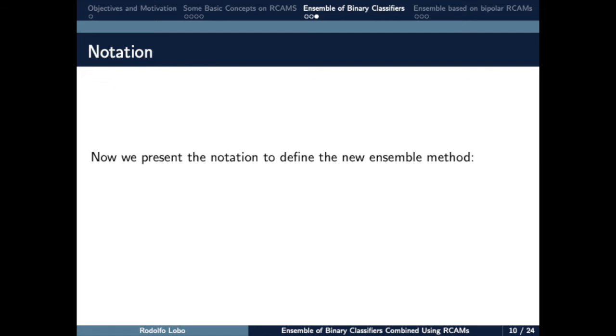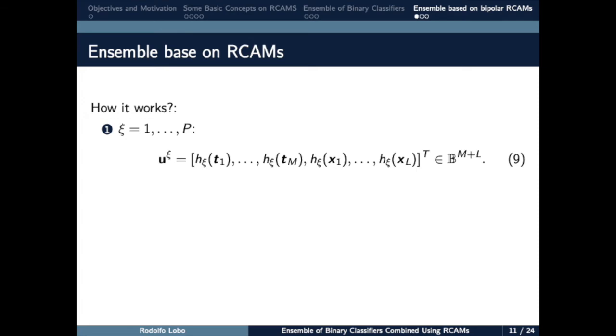Let us now present the notation of this work. Calligraphic T is the training set, where each Ti are vectors of features, and the Di, the corresponding class. X is a batch of input samples. The ith fundamental memory is obtained by concatenating the outputs of the ith base classifier, evaluated at the M training samples and the L input samples.